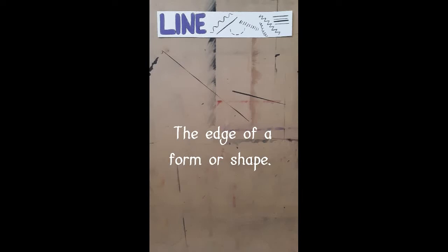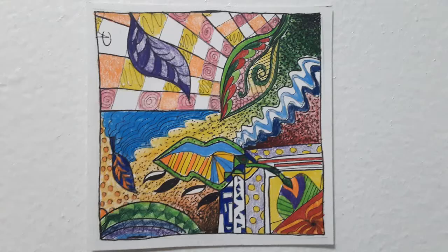Line is the edge of a form or shape. It can be thick, thin, squiggly, and straight. An example of how line can be applied is a zentangle. Check out our zentangle activity for how to make one.